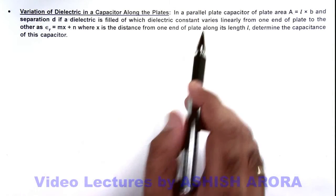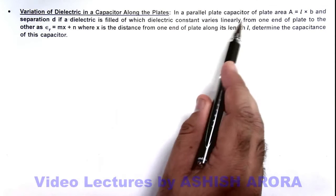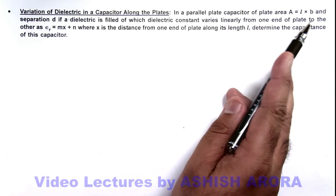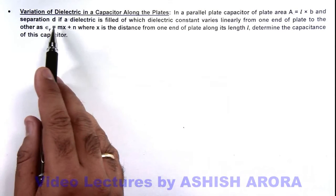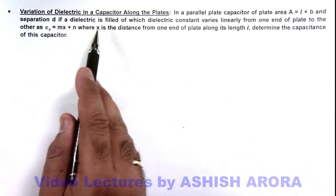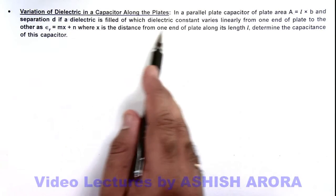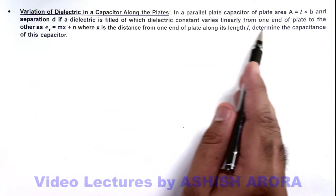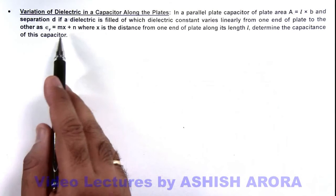Here in this illustration, we are given that in a parallel plate capacitor of plate area A which is l by b and a separation is d, if a dielectric is filled of which the dielectric constant varies linearly from one end of plate to the other as εr = mx + n.